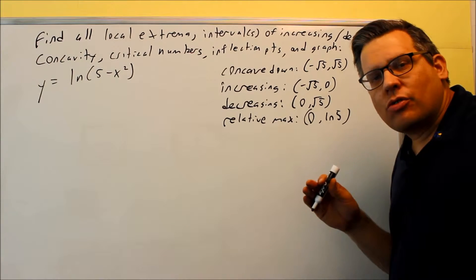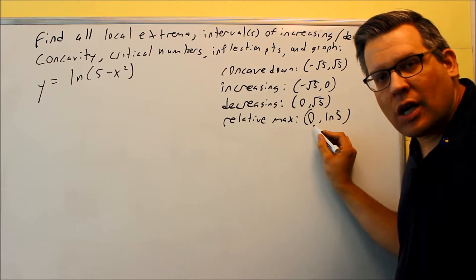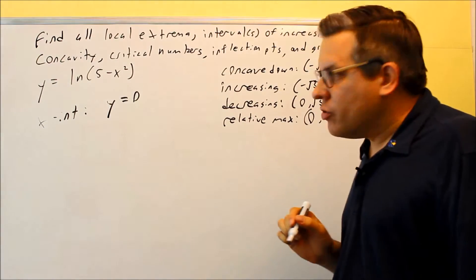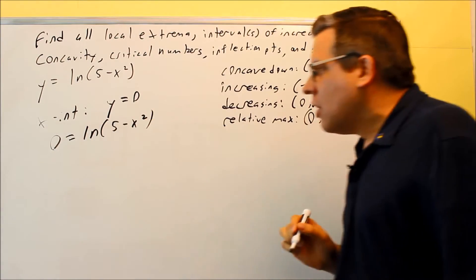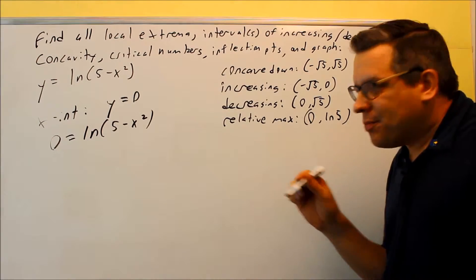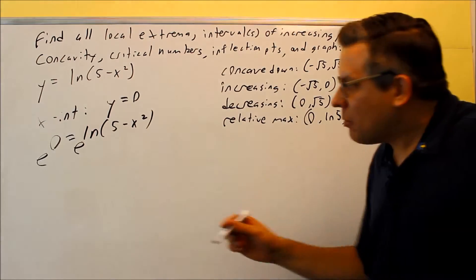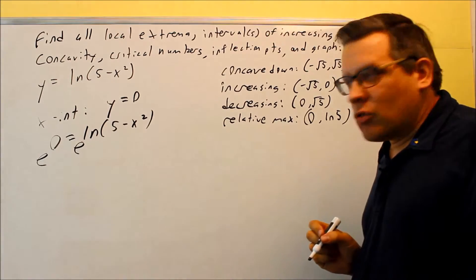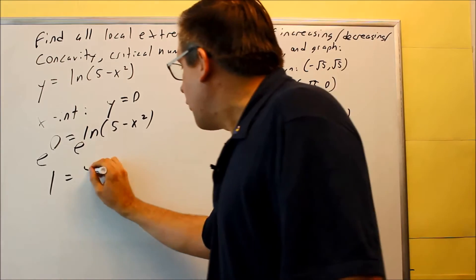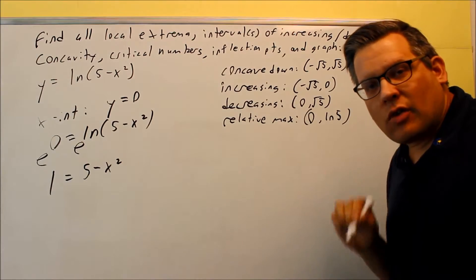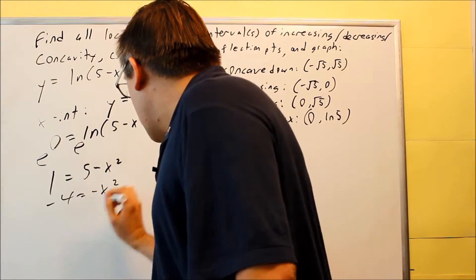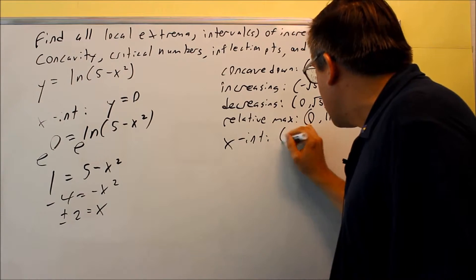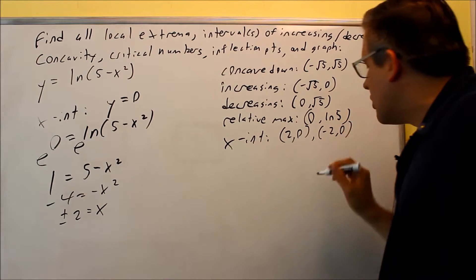Before graphing, we should find the x-intercepts. We set y = 0: 0 = ln(5 minus x squared). To solve, we exponentiate both sides — making e the base — which cancels the natural log. e to the 0 is 1, so we get 1 = 5 minus x squared, which gives x squared = 4, and x = plus or minus 2. So the x-intercepts are (2, 0) and (negative 2, 0).